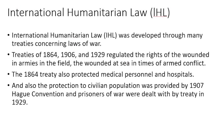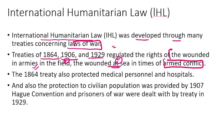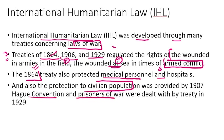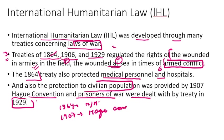International Humanitarian Law developed through many treaties concerning laws of war. Key treaties from 1864, 1906, and 1929 regulated the rights of wounded armies on the battlefield and at sea. The 1864 treaty also protected medical personnel and hospitals. Civilian population protection was addressed by the 1907 Hague Convention. Prisoners of war — soldiers captured by the enemy during conflict — were dealt with by the treaty of 1929.